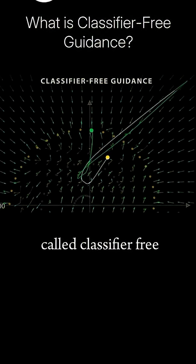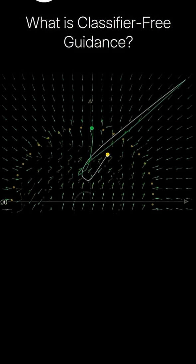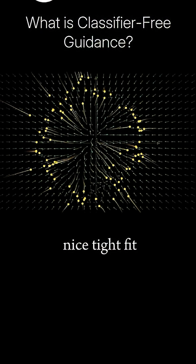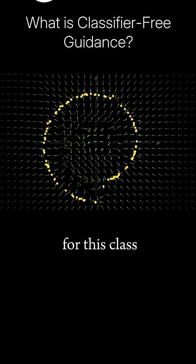This approach is called classifier-free guidance. Using our new green vectors to guide a set of cat points, we see a nice tight fit to our spiral for this class.